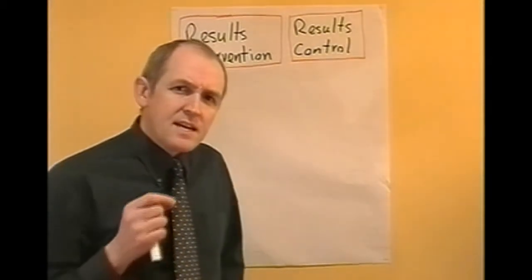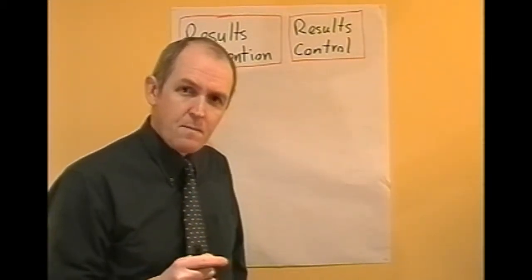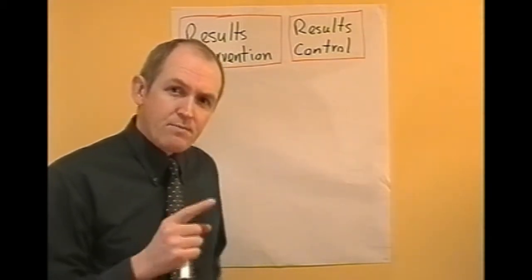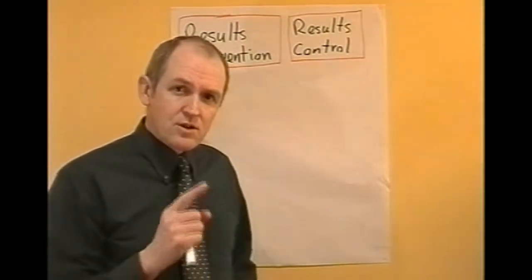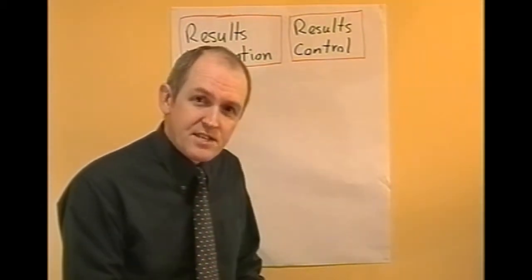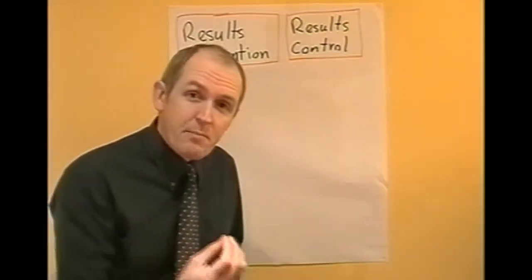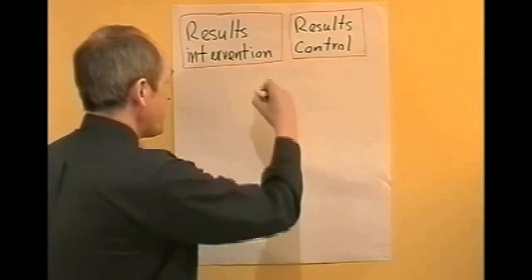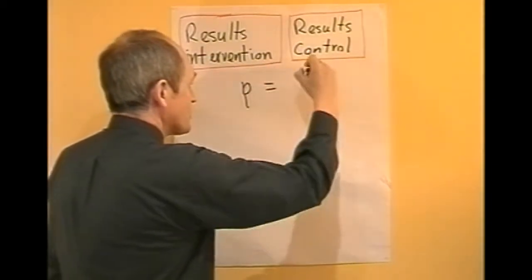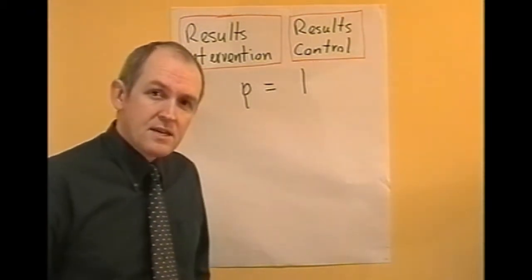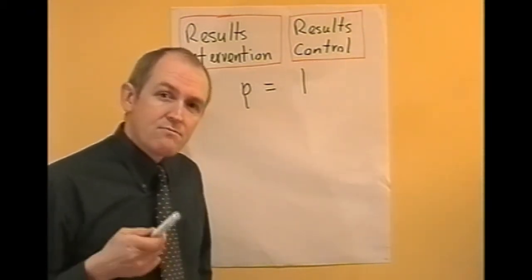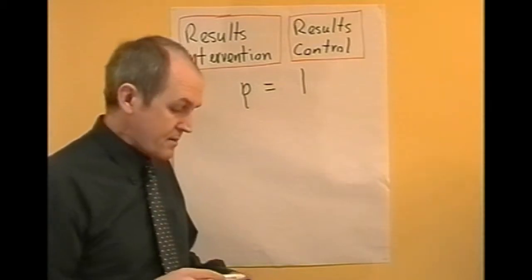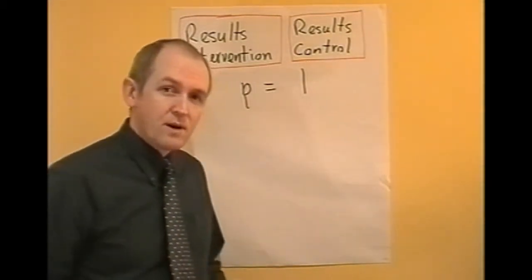Significance is expressed in terms of a probability that there is a genuine difference between the two groups. You've probably seen the term p-value. The end result of the statistical test, in this case the t-test, is that you get a p-value. If p equals 1, that means there's a 100% probability that the result arose by chance — so p equals 1 means the result definitely arose by chance.